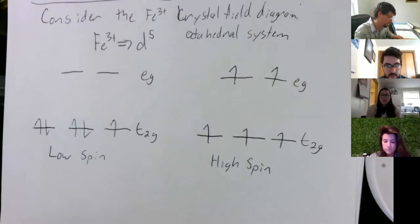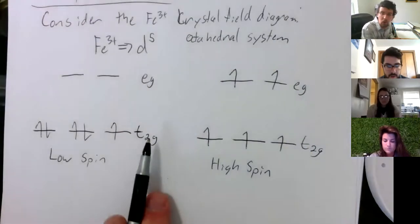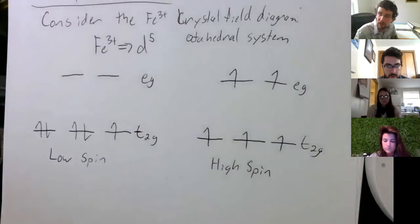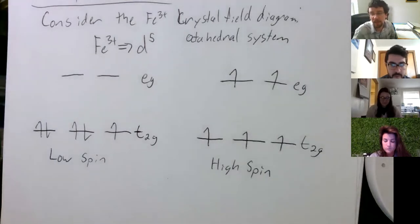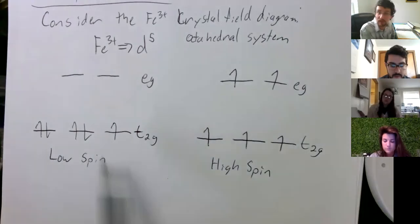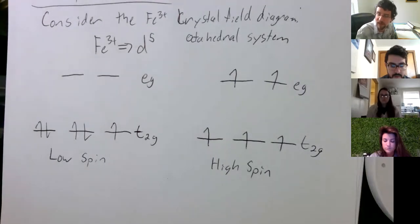What do t2g and eg stand for? These are orbital symmetry labels from molecular orbital theory. We keep specifying them because when we connect to MO theory to explain these systems, it will make more sense — there will be a clear connection.